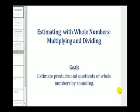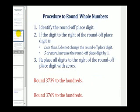Let's do a quick review on how we round whole numbers. The first thing we do is identify the round-off place digit. For these two examples, notice we want to round to the hundreds, so in both cases the seven is in the hundreds place value. Next, the digit to the right of the round-off place value tells us whether to round up or round down.